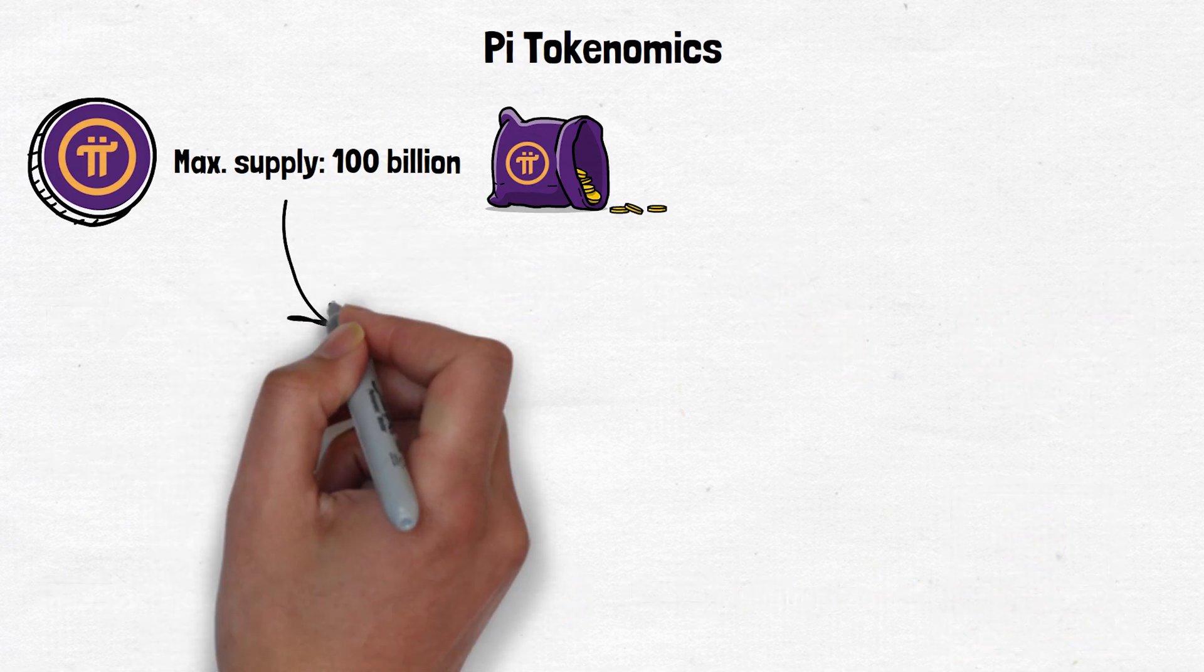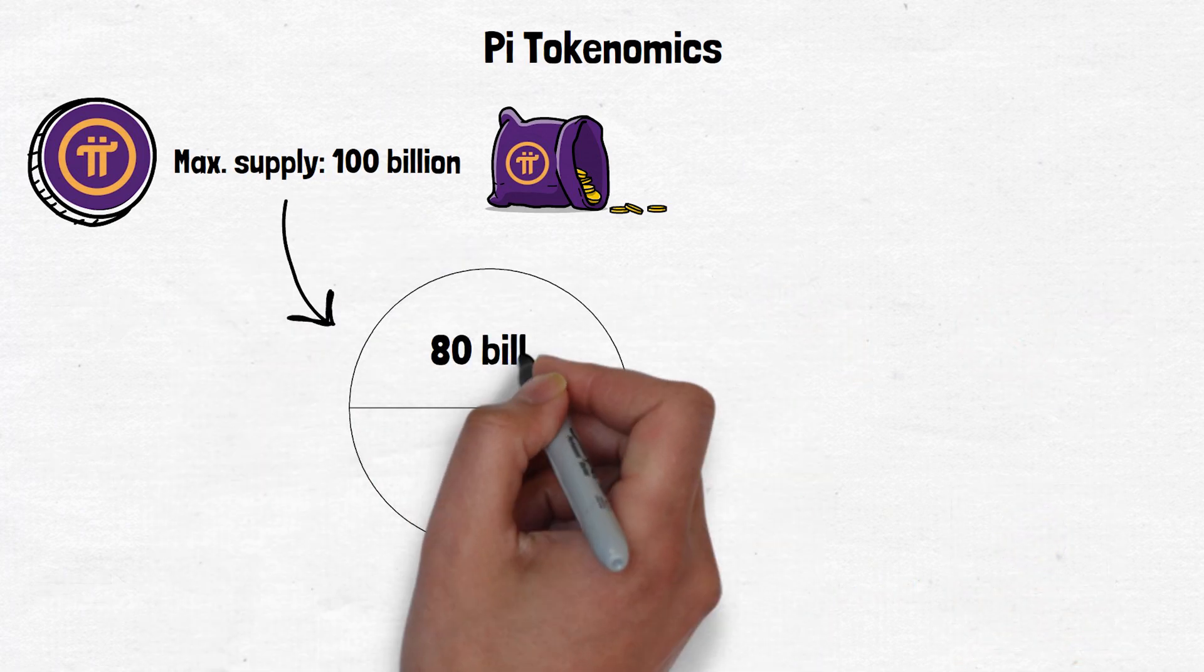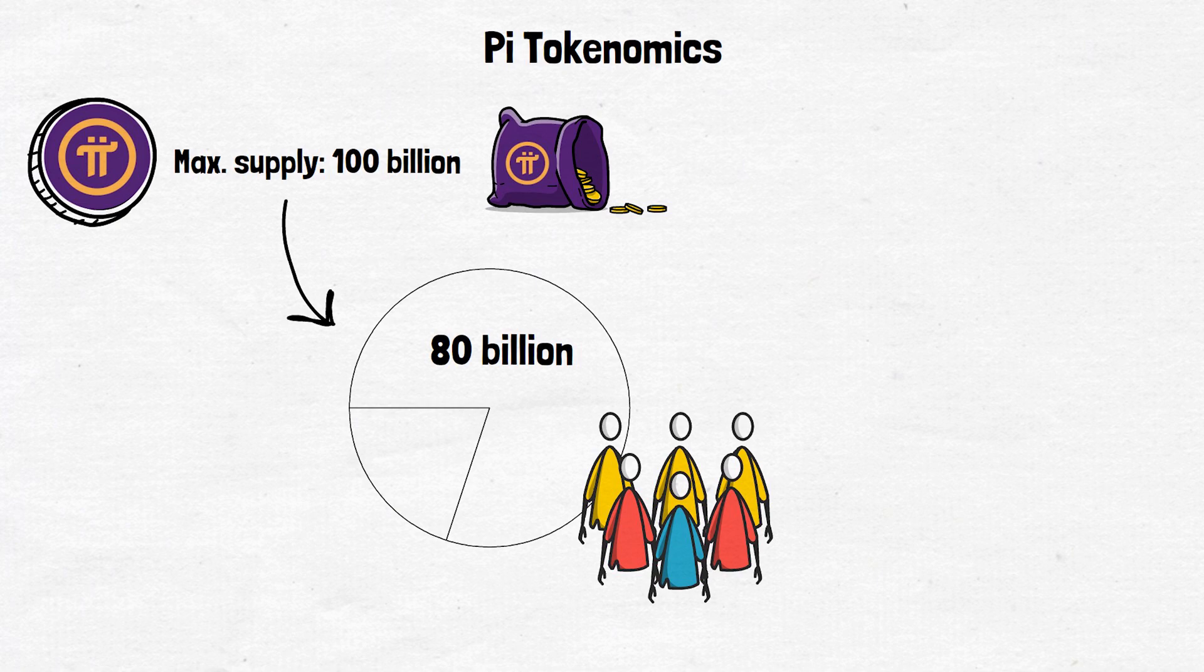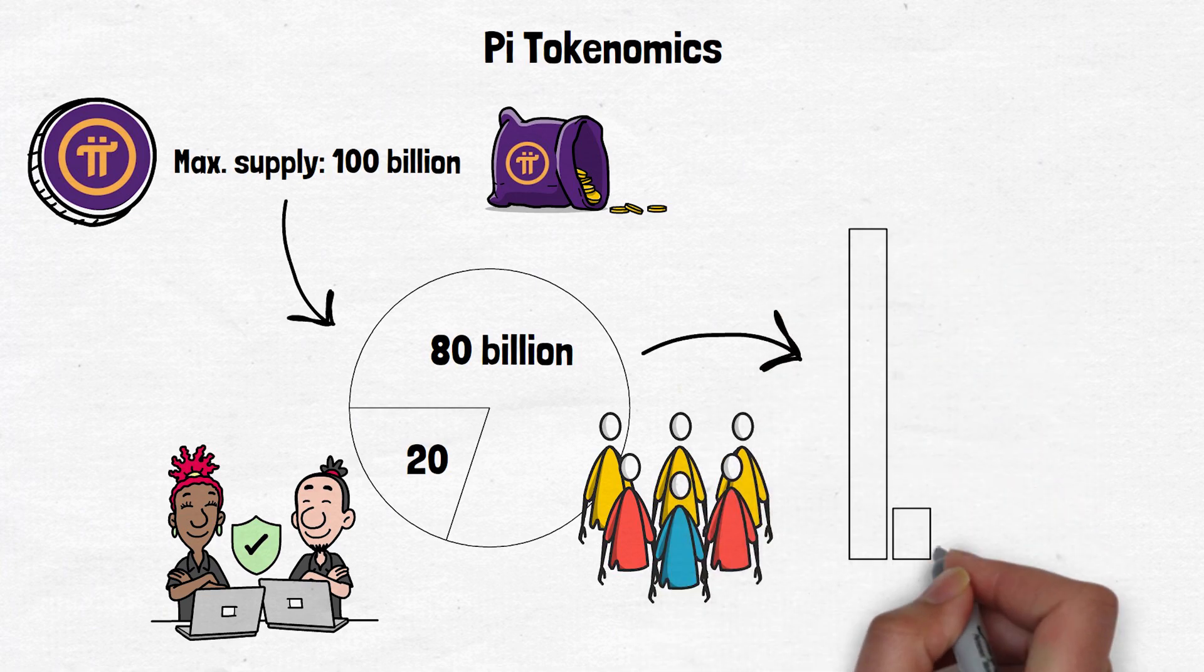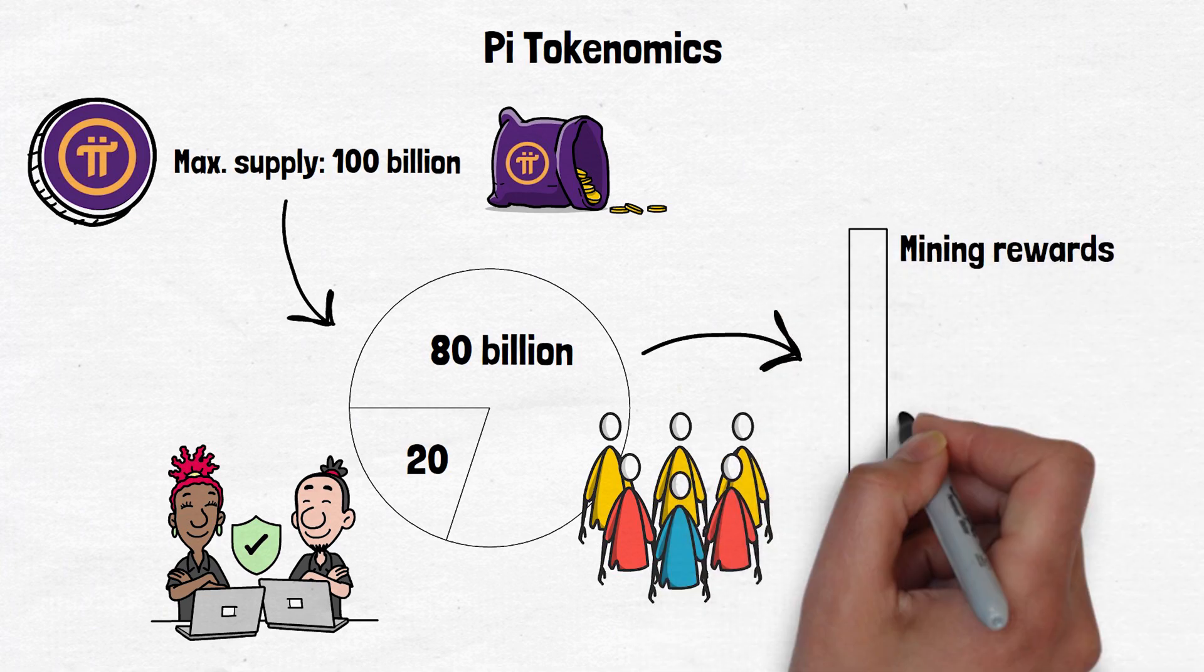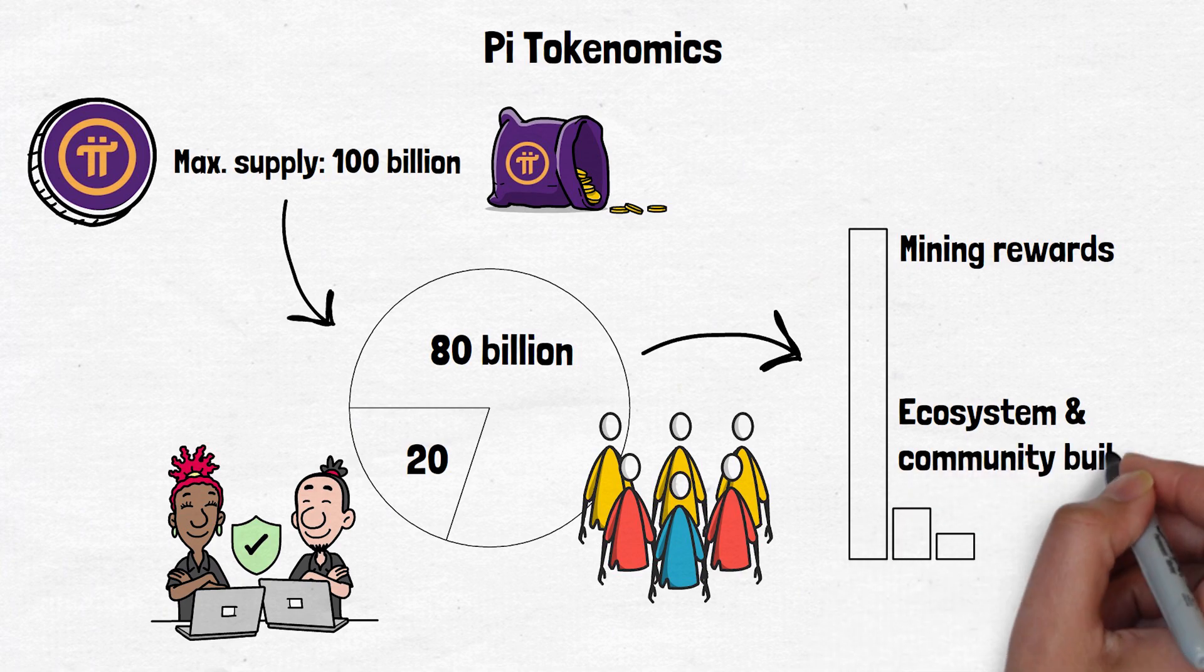Out of the total supply, 80 billion Pi tokens are reserved for the community, while the remaining 20 billion tokens are allocated to the core team. Within the community's allocation, 65 billion tokens are set aside for mining rewards, 10 billion for ecosystem and community building, and 5 billion for a liquidity pool to support smooth operations within the network.